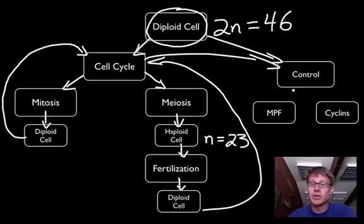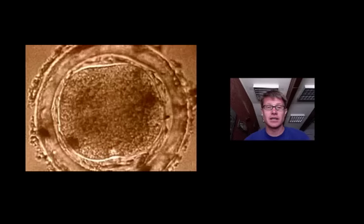I also want to talk about how we control the creation of diploid cells — how we use cyclins, like the mitosis promoting factor, to control the cell cycle and where it is headed next.